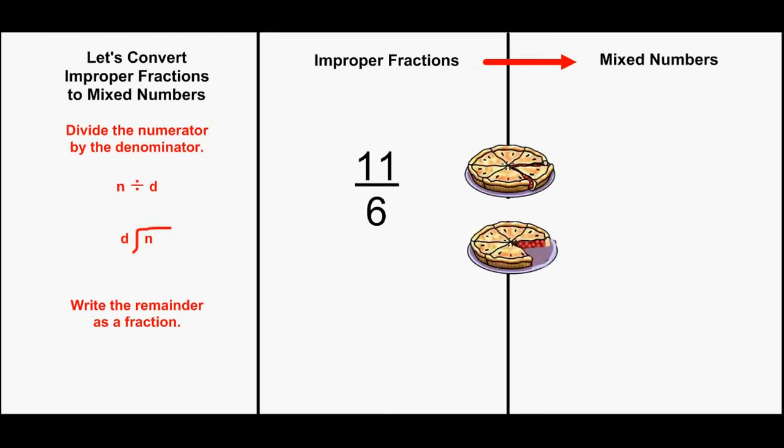Let's try another one. Here, I have the improper fraction 11 sixths. We will write 11 divided by 6. To change it to a mixed number, let's do a division.